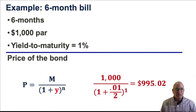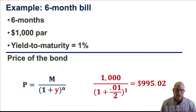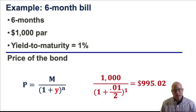Let's give an example on a six-month Treasury bill. Six months in the future, $1,000 par, and let's say its yield to maturity is 1%. In this case, as you can see, its price is $995.02.